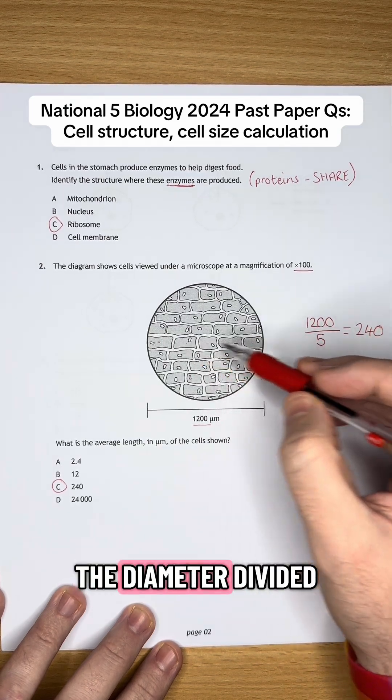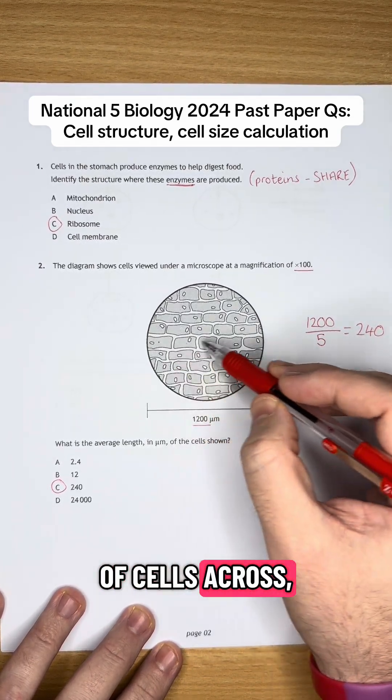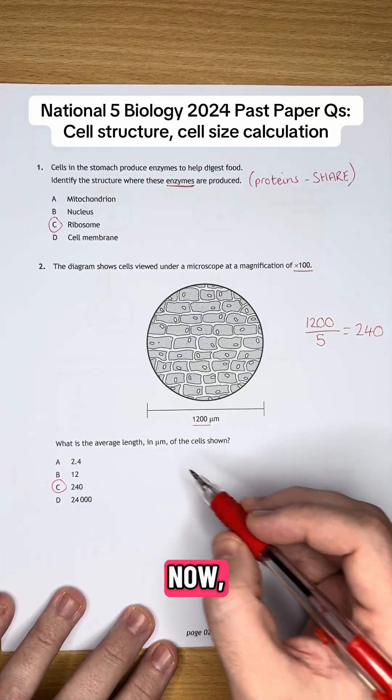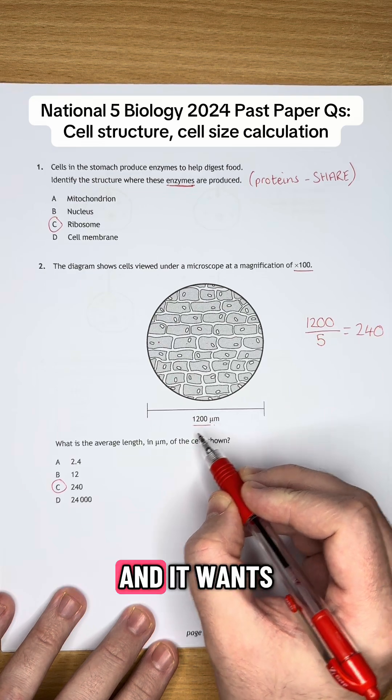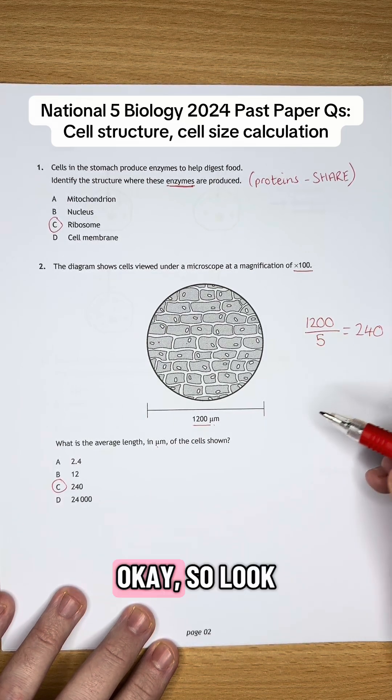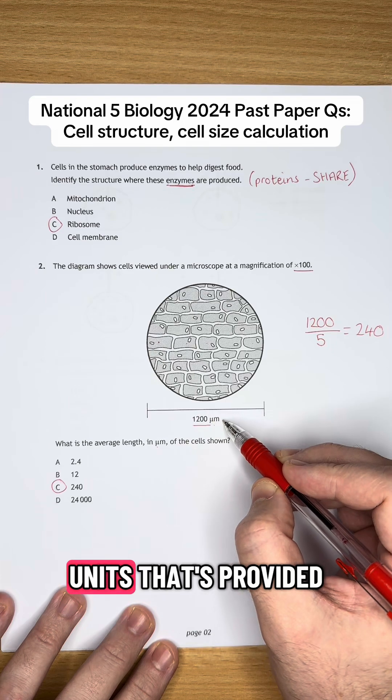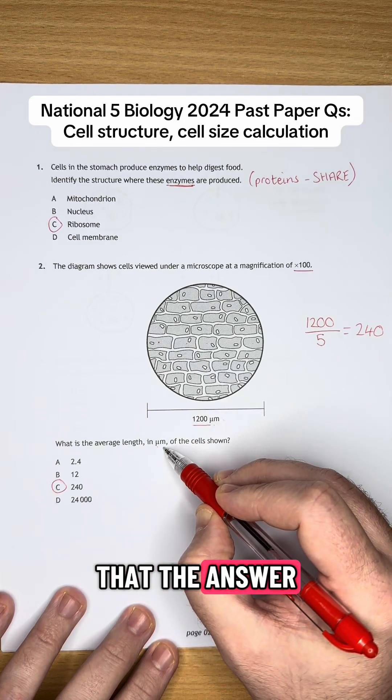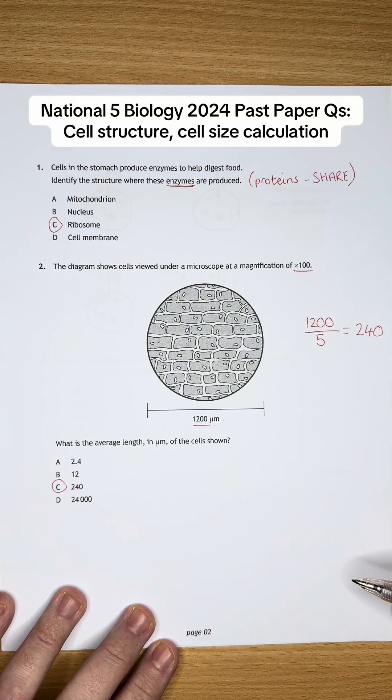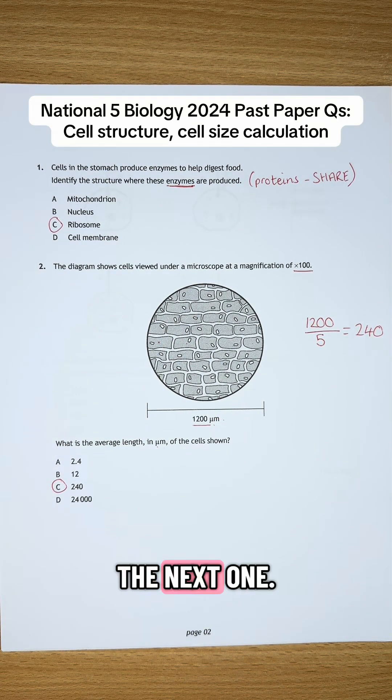So we do the diameter divided by the number of cells across, which is 5, and that will give us the length of each of the cells. Now, because this is already in micrometers and it wants the answer in micrometers, we don't have to do that unit conversion that we sometimes do. So look out for the units that are provided and the units that the answer has to be in. If they're the same, you don't have to do the conversion. Okay folks, hope that helped. See you in the next one.